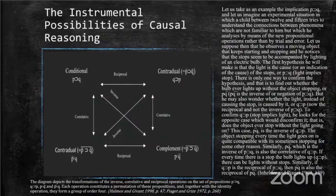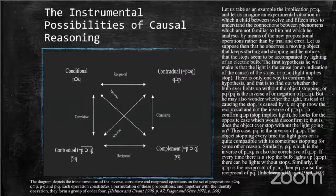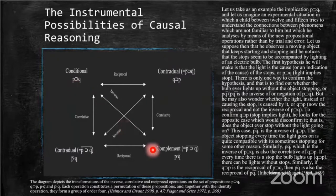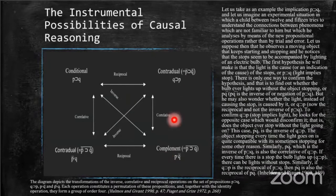Confronted with an unfamiliar situation — for example, a light going on (p) and an object stopping (q) — structural possibilities are used as a cognitive tool to illuminate the relationship between the phenomena. A causal hypothesis is first formed — p implies q — and tested by looking for observations that would falsify it. The falsifying observation is anticipated by the complement: p and not-q. If the first hypothesis is falsified, a new hypothesis — q implies p — is then formulated and tested by looking for its complement: q and not-p.